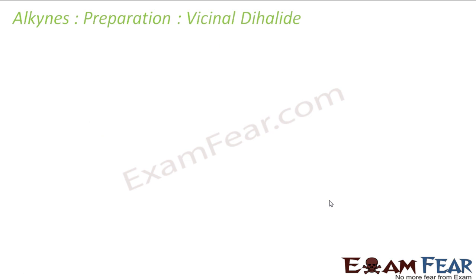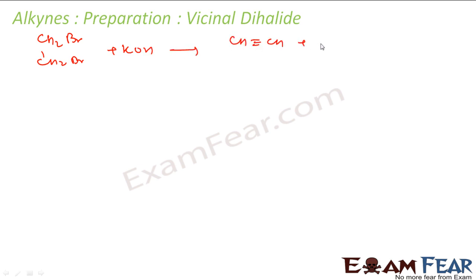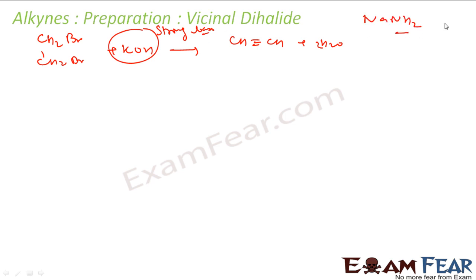The next method is from vicinal dihalide. The reaction is: you have a dihalide and you react it with a very strong base — NaOH can be used. You get Ca(OH)₂ and the product. This is an elimination reaction — it is an E2 reaction.